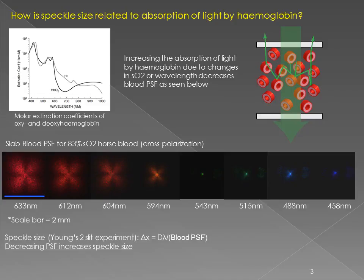If the light is absorbed very strongly, it has a chance to only undergo one or two scattering events and it doesn't move very far from the native diameter of the laser beam. But at 633 nanometers where it's not highly absorbed, it has a chance to make many scattering events and you actually see a pattern that's almost two millimeters across. These measurements were made with horse blood at 83% oxygen saturation, and you can see that as the wavelength decreases this blood point spread function decreases in size. It turns out that the speckle size is inversely proportional to this blood point spread function — so a very small point spread function produces very large speckle. That's the basis of this technique.